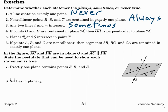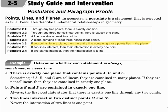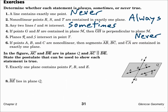Number four: if points G and H are contained in plane M, then segment GH is perpendicular to plane M. That postulate says if two points lie in a plane, then the entire line containing those points lies in the plane — not perpendicular to the plane, but in the plane. So that statement is never true.